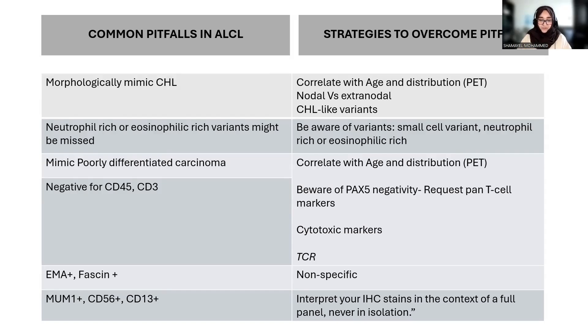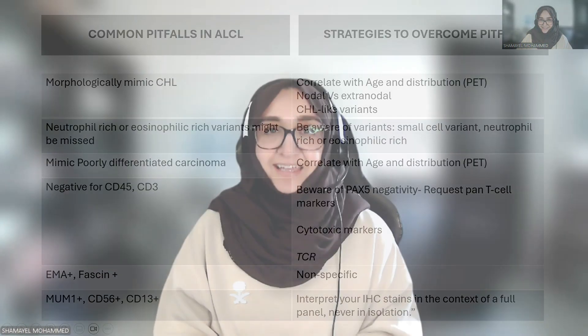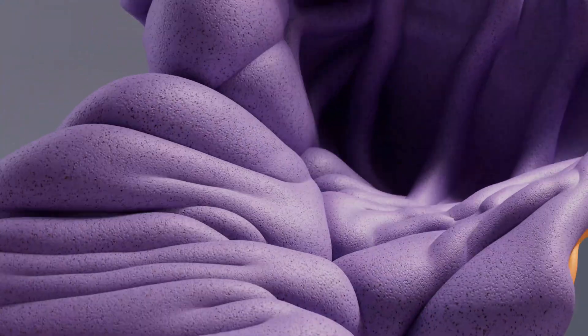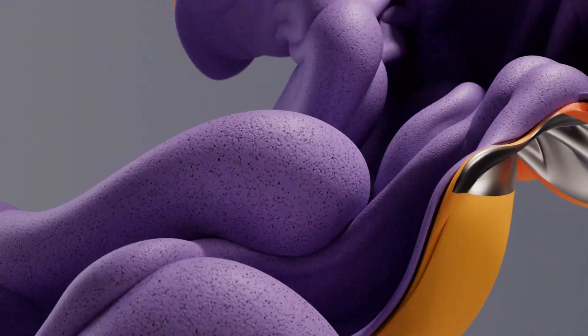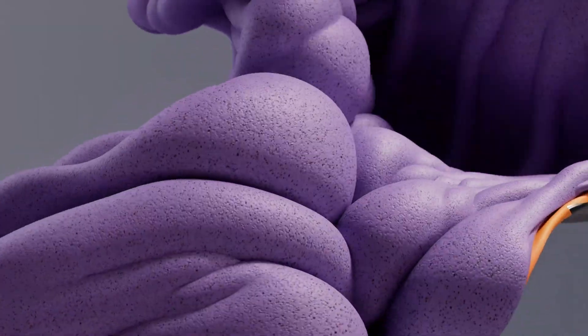ALCLs can also be CD30 positive, so you can think of myeloid neoplasm — but with a systematic approach, always do your pan-B and T-cell markers and extra T-cell markers. Now it's your time to chat — let us know in the comments below what strategies you use to avoid these pitfalls. As always, stay curious, keep learning, and enjoy your chai. Until next time.